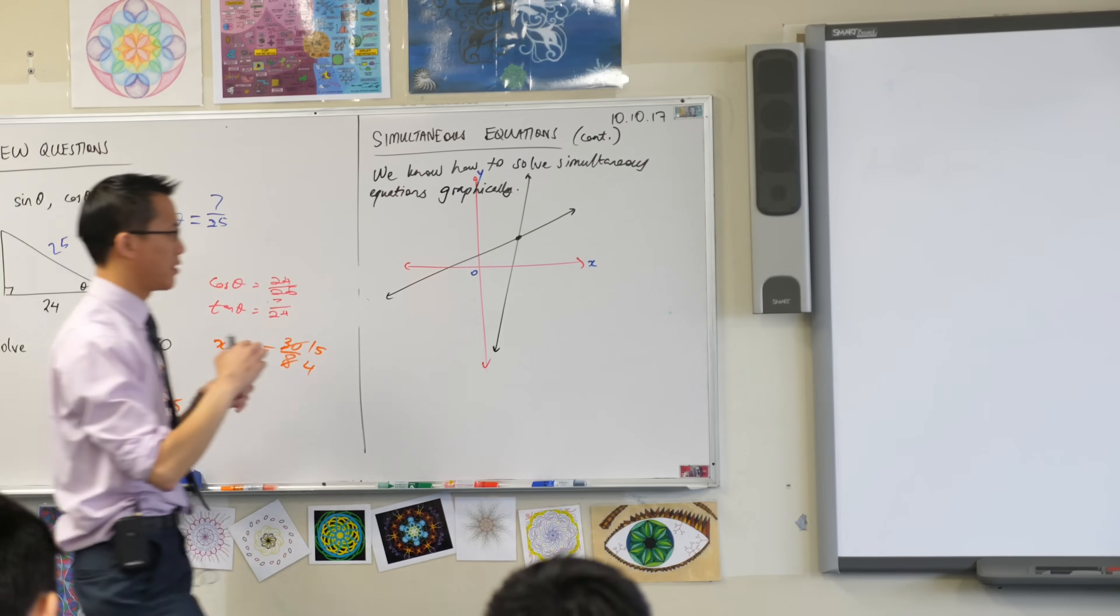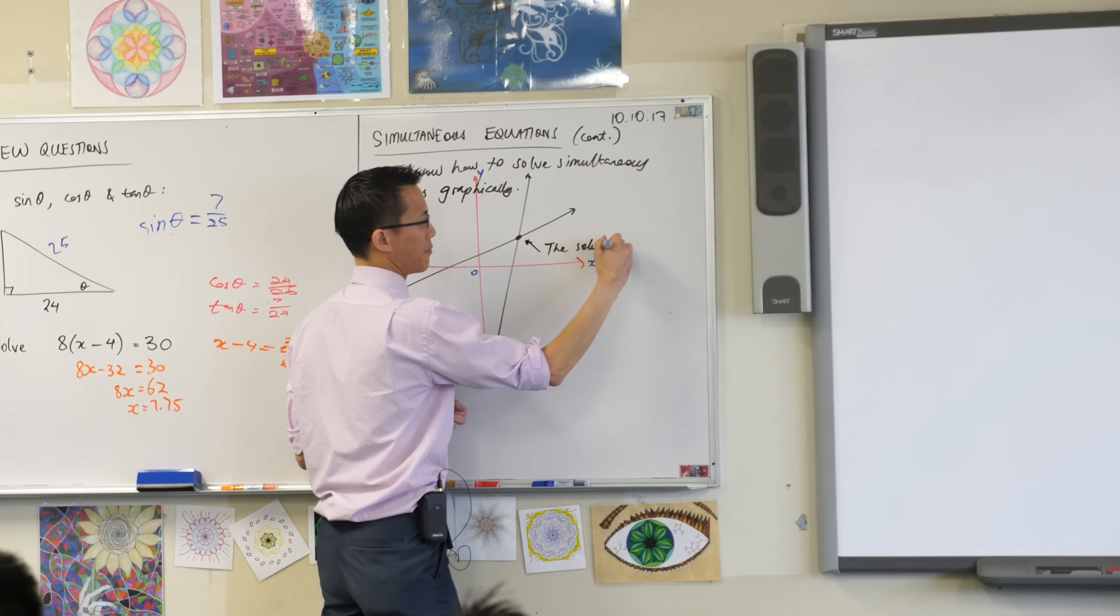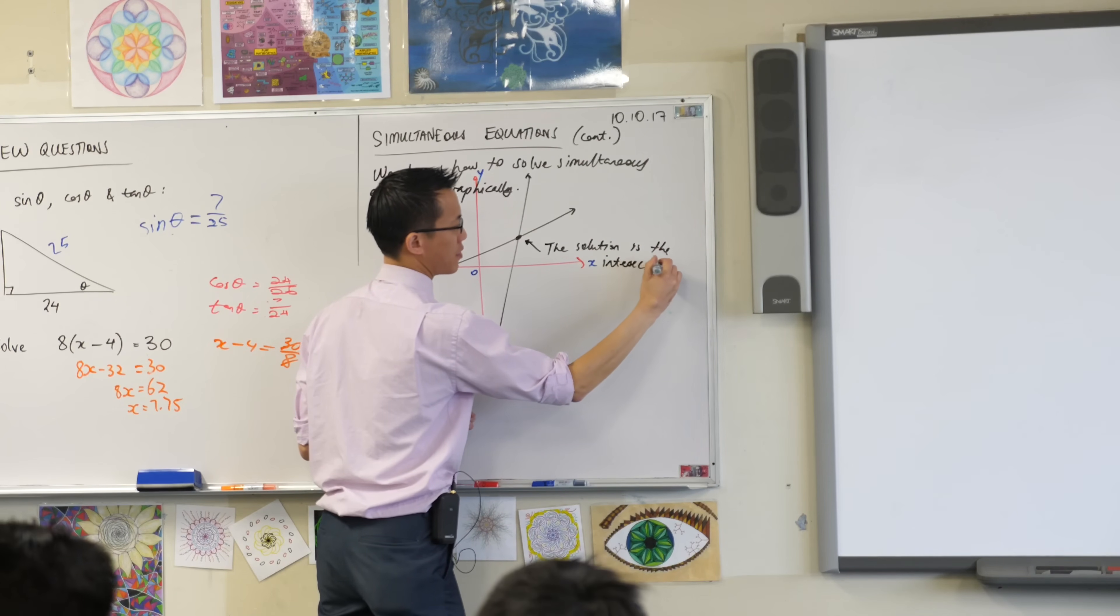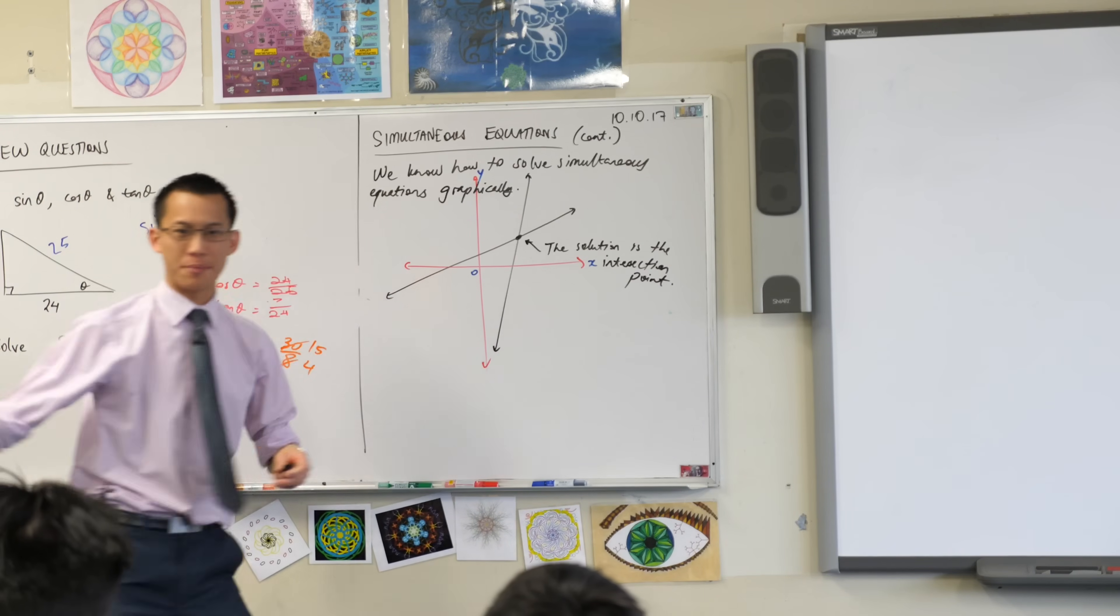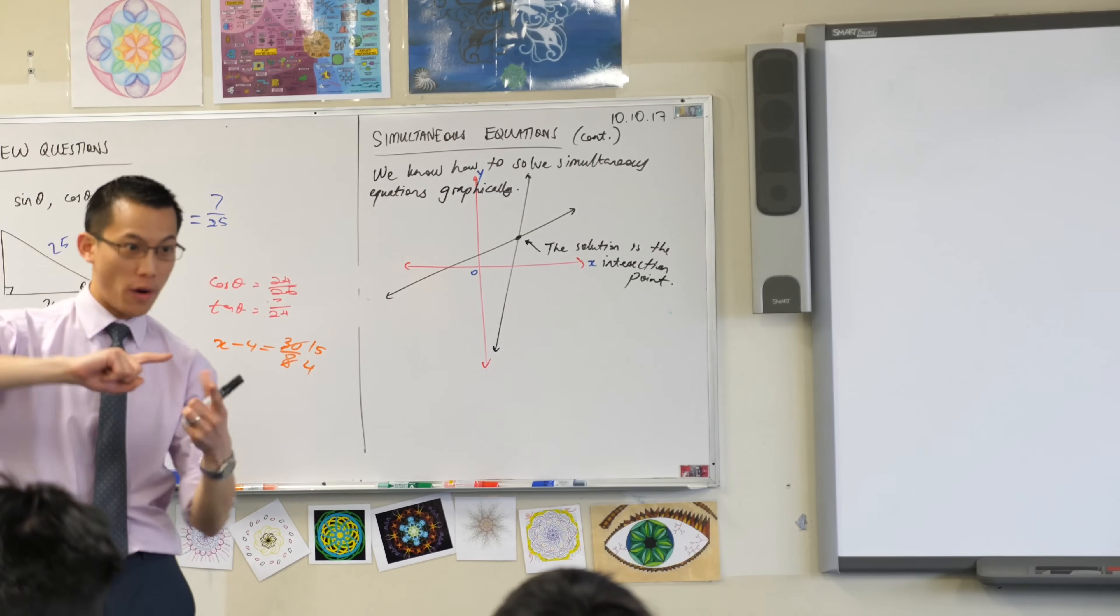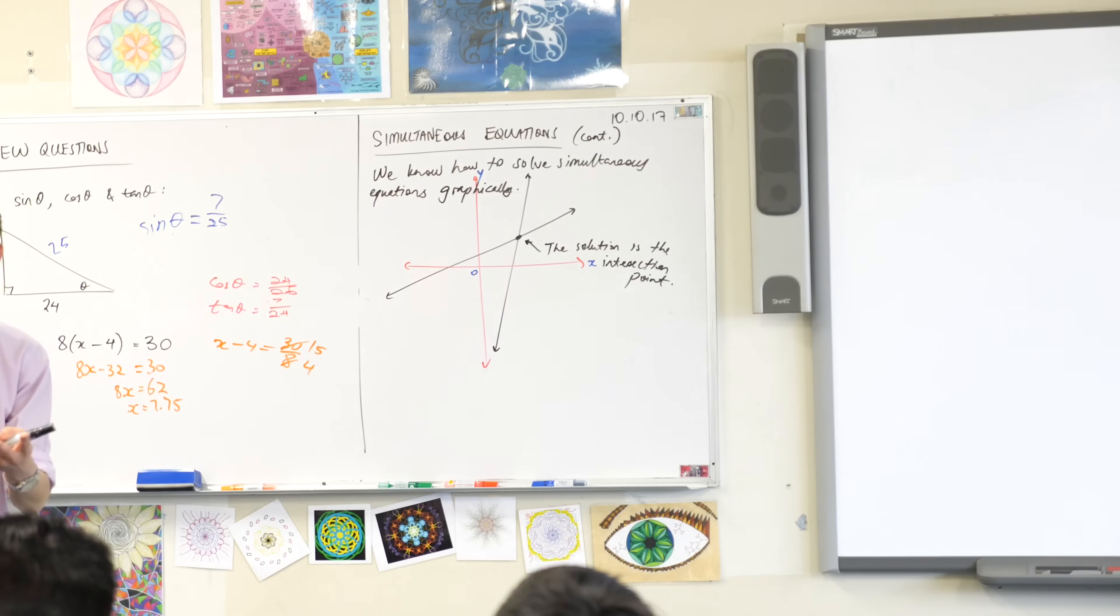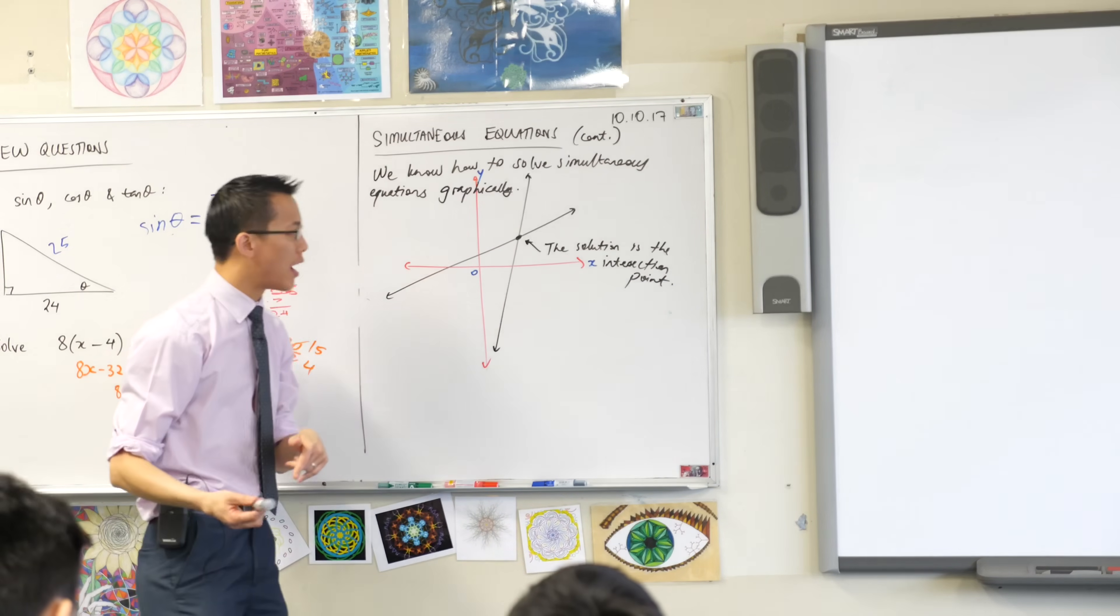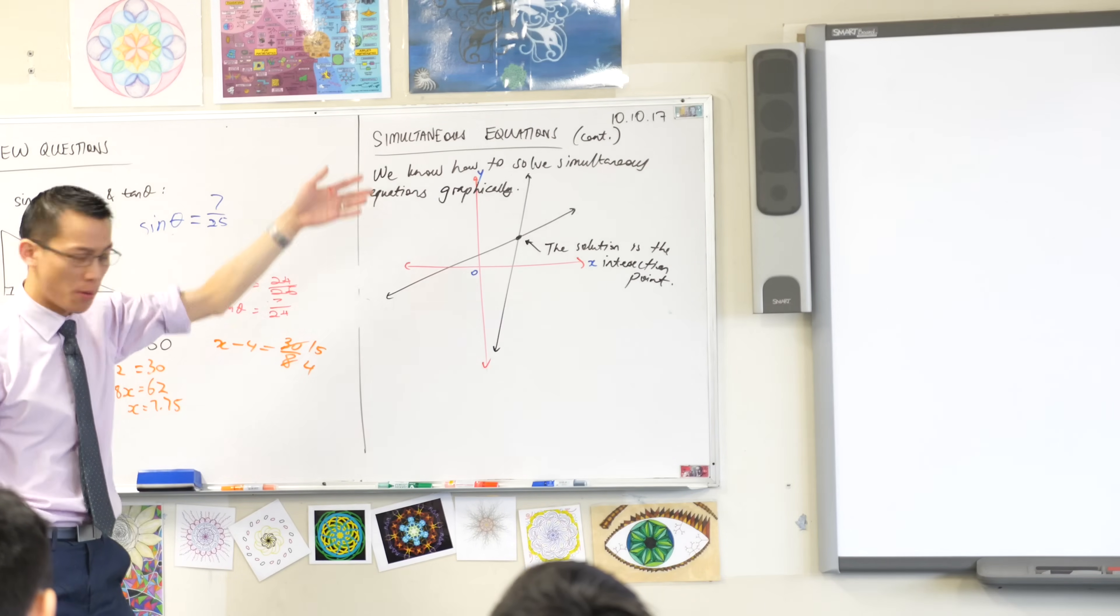The solution is the intersection point. You don't need to have that on your diagram, you can just write it as a separate sentence but since I've got one, I'm just going to label it along there, okay? Now this is all well and good when number one your equations are nice and convenient and neat and number two when you've got a grid on there and it's easy to read off, oh like where is that thing, okay?